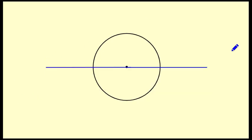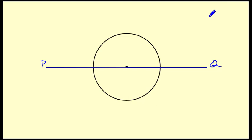Now we can label the points. We have labeled P and Q. Now we have to draw the tangents from these points P and Q to the circle. Let this center be O. We will find out the perpendicular bisector of OQ and also the perpendicular bisector of OP.